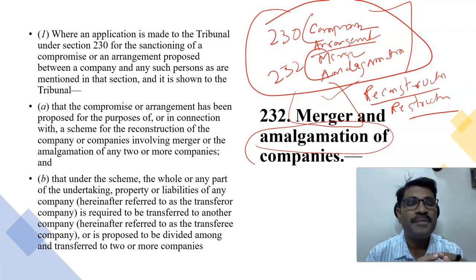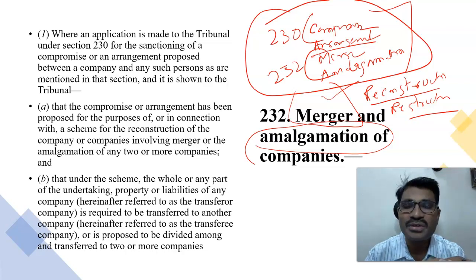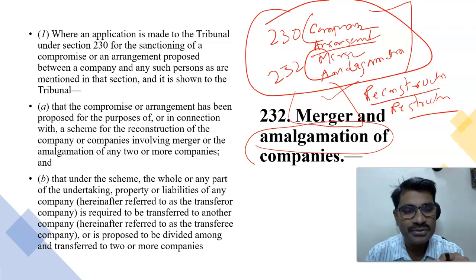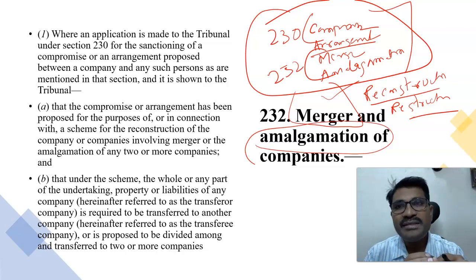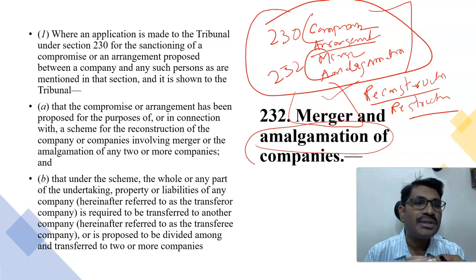There are four forms of restructuring: (1) compromise, (2) arrangements, (3) merger, and (4) amalgamations. The first two are under Section 230 and the other two are under Section 232. Under Section 233, all these are collectively called reconstruction, or otherwise called restructuring of companies.